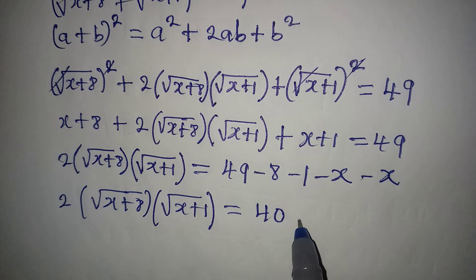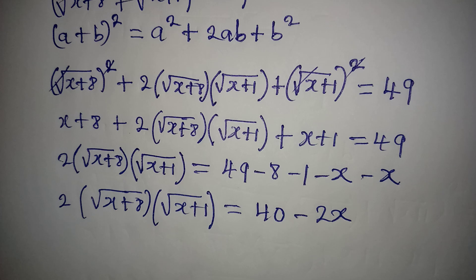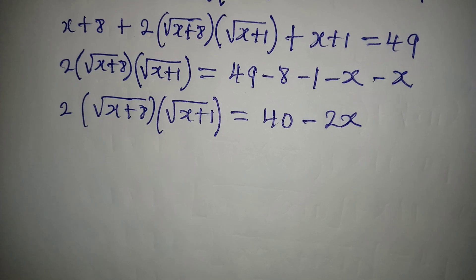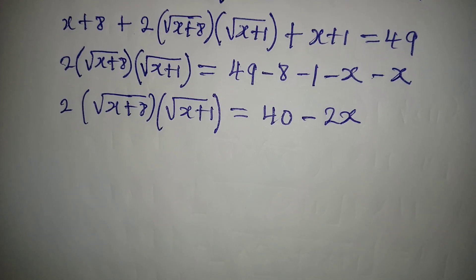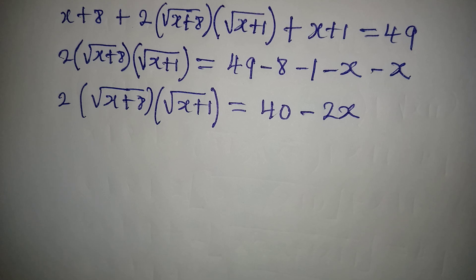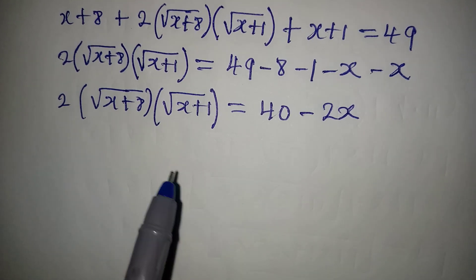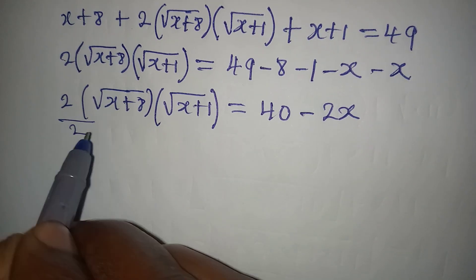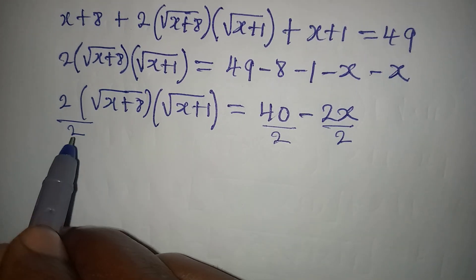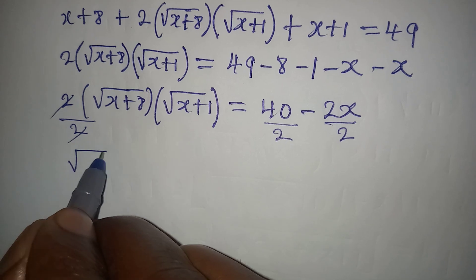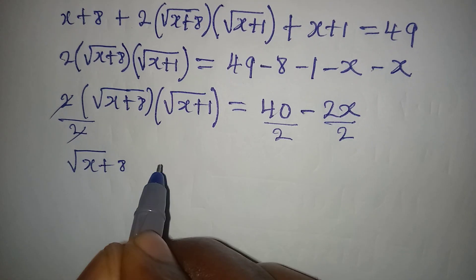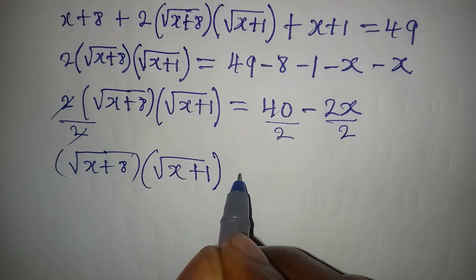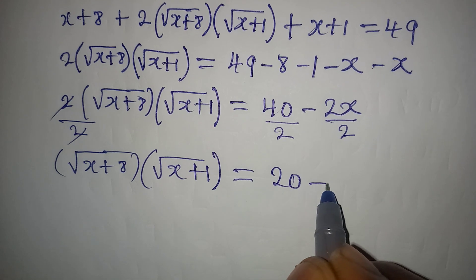From here, why don't we divide both sides by 2? Dividing everything by 2, we get square root of (x + 8) multiplied by square root of (x + 1) equal to 20 minus x.